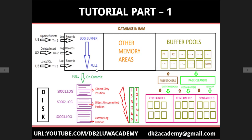For data modifications, transaction log records are generated and they fill up the log buffer memory area in RAM. You can see the transaction log records are placed into the buffer memory in RAM and grow in a downward direction. Eventually the log buffer becomes full, and it must be flushed from memory to the hard disk — that is where transactional log files come into picture. The log records flush to files named S0000001.LOG, S0000002.LOG, S0000003.LOG, and so on.